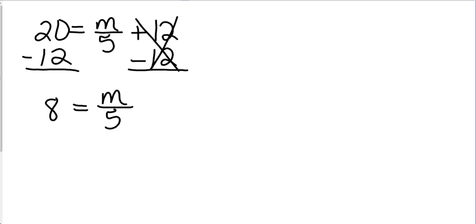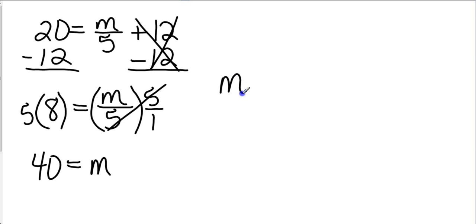And because this is division, the opposite of division is multiplication. I'm multiplying both sides by 5. 5 times 8 is 40. And over here, the 5s will cancel. We're left with m over 1, which is just m. And so, I like to look at that as m equals 40 instead of 40 equals m. Same thing. This is just a personal preference. I'll put the variable in front. m equals 40.